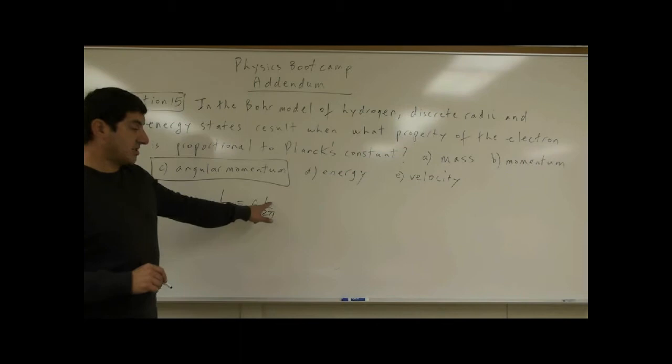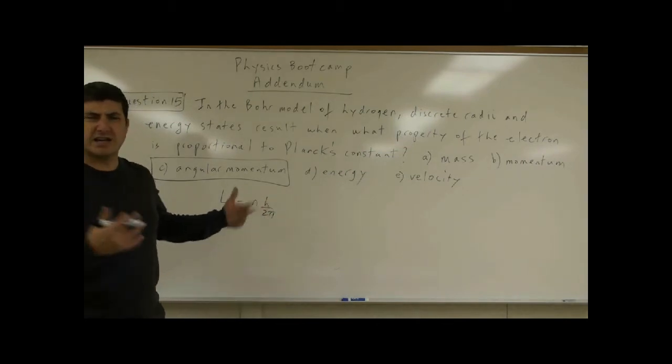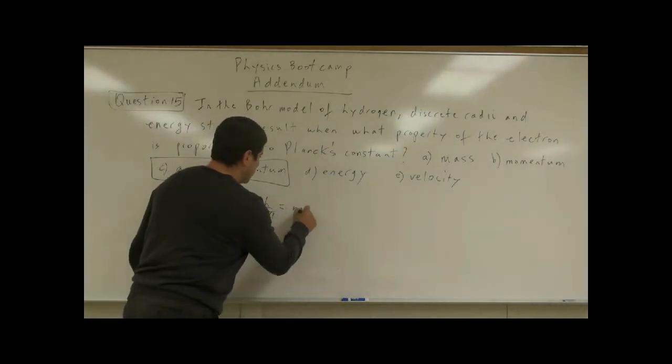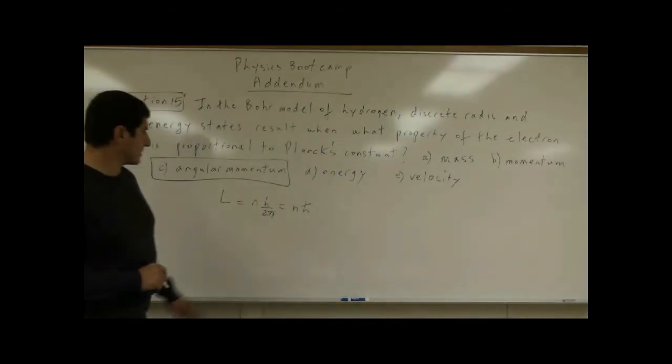The Planck's constant is h divided by 2π. A lot of times this is called h bar. We write it this way.